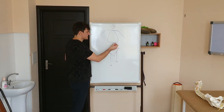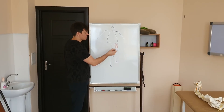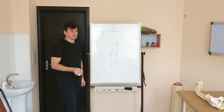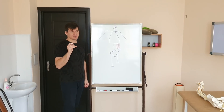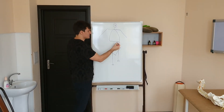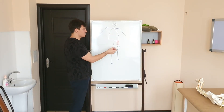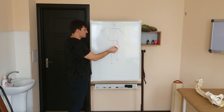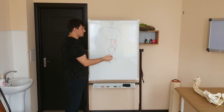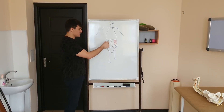On the side where the pelvis is higher, the muscles on that side are holding it in place — these are the oblique abdominal muscles, the quadratus lumborum muscles, and the psoas muscle, which goes from the spine down to the thigh.